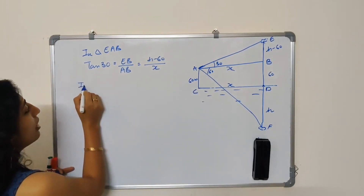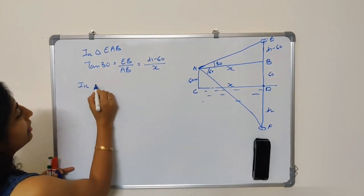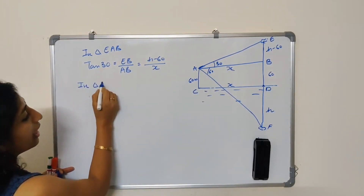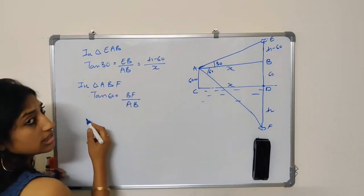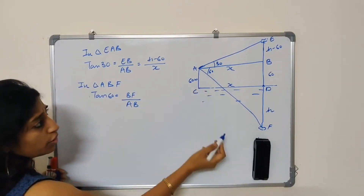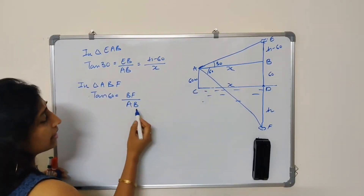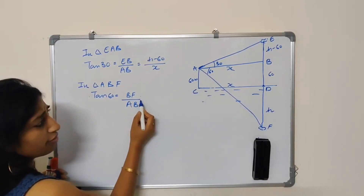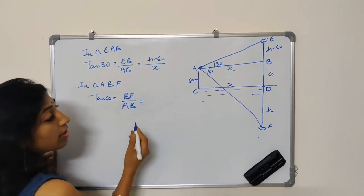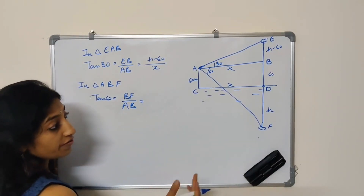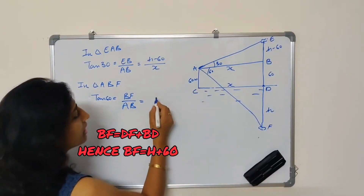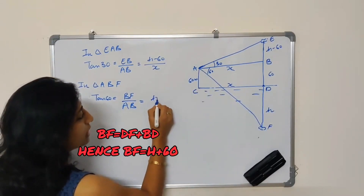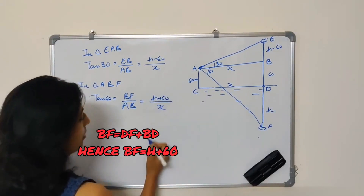In the same way, in triangle ABF, tangent 60 is equal to opposite upon adjacent, that is BF upon AB. Here, what is BF? DF is H, so BF is H plus 60. Therefore, tangent 60 equals H plus 60 upon X.